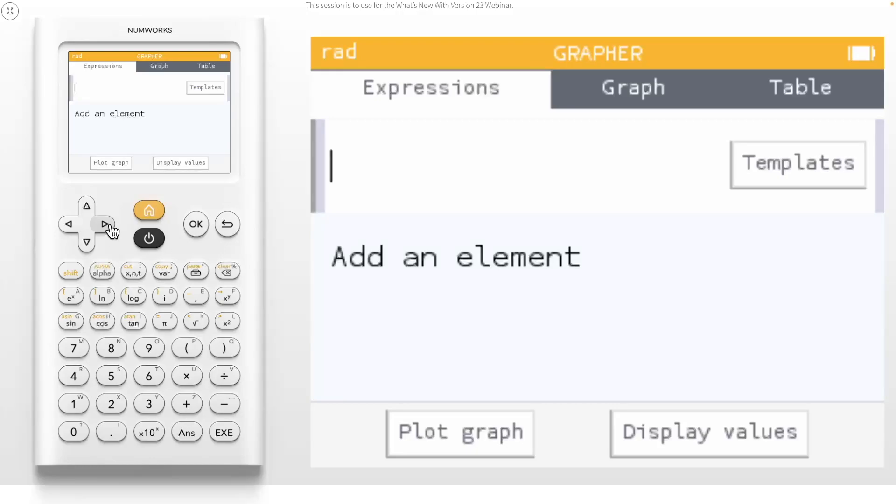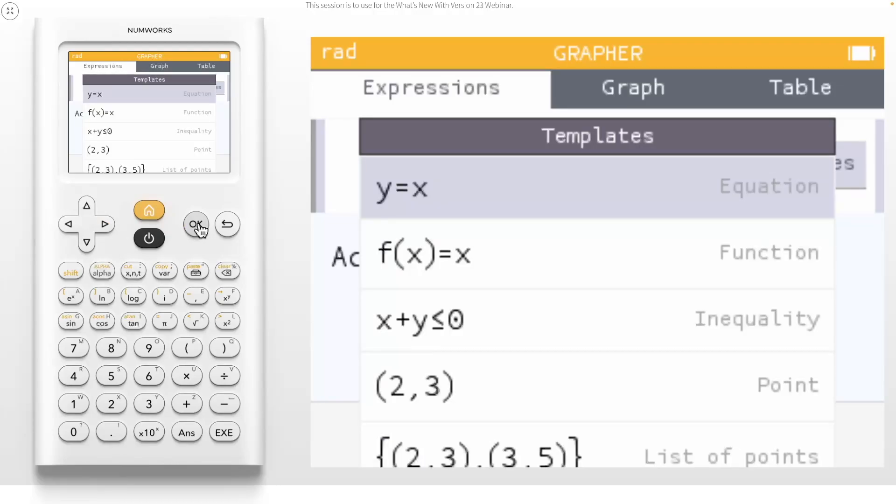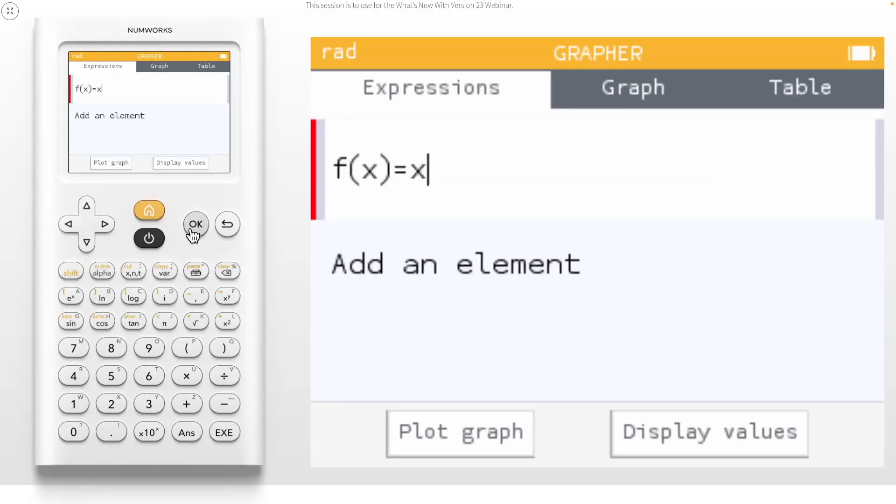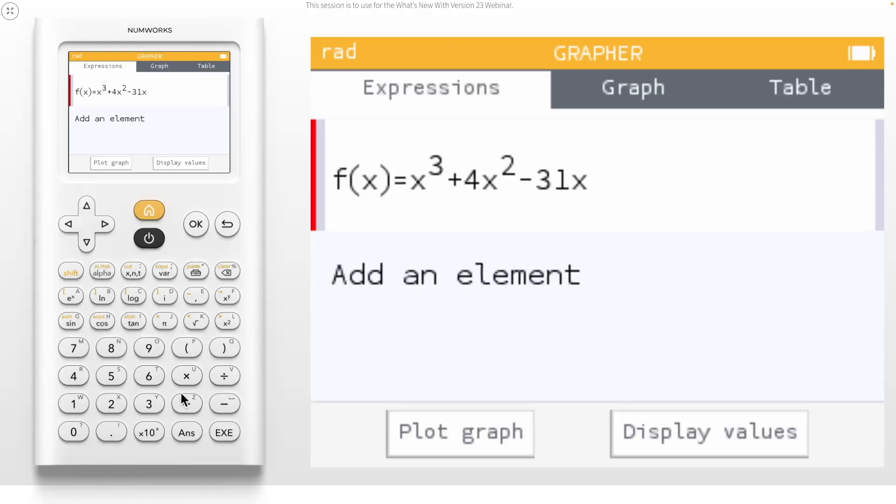We've kept all your favorite templates in the template menu and even made a few updates to some. You can access these by navigating to the right and pressing OK on the templates button. Let's select the function template and edit it to make the function equal x cubed plus 4x squared minus 31x minus 70.